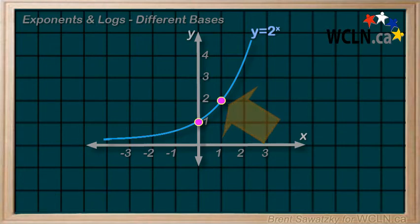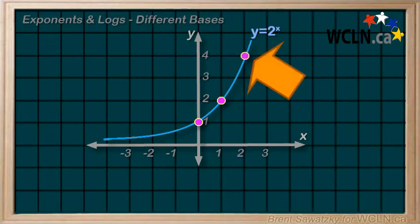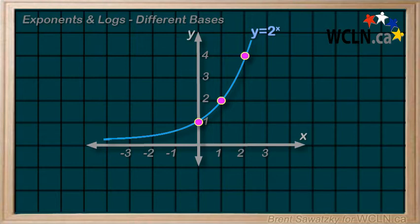When x equals 2, y would be 2 to the 2, or 2 squared, is 4, and so on. It just grows like this. In this tutorial, we'll note that the base doesn't have to be 2. Let's look at what happens when we have other bases.